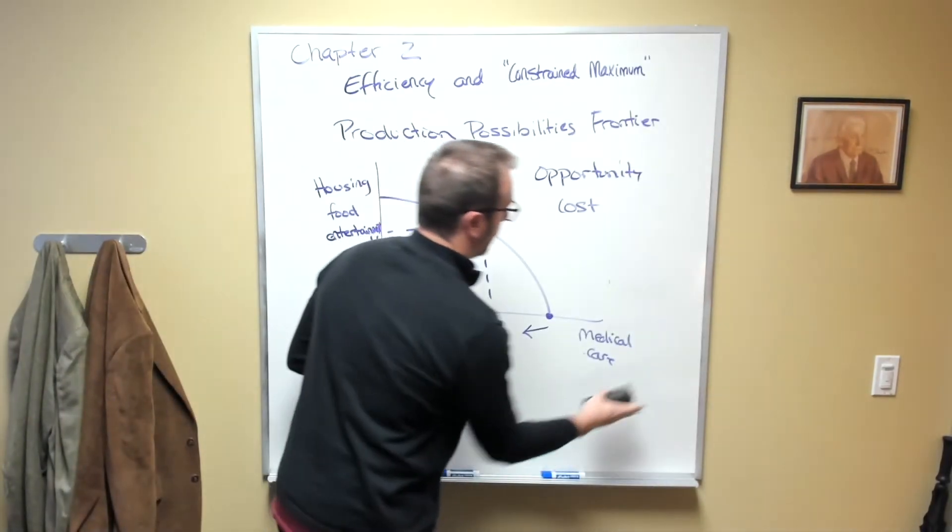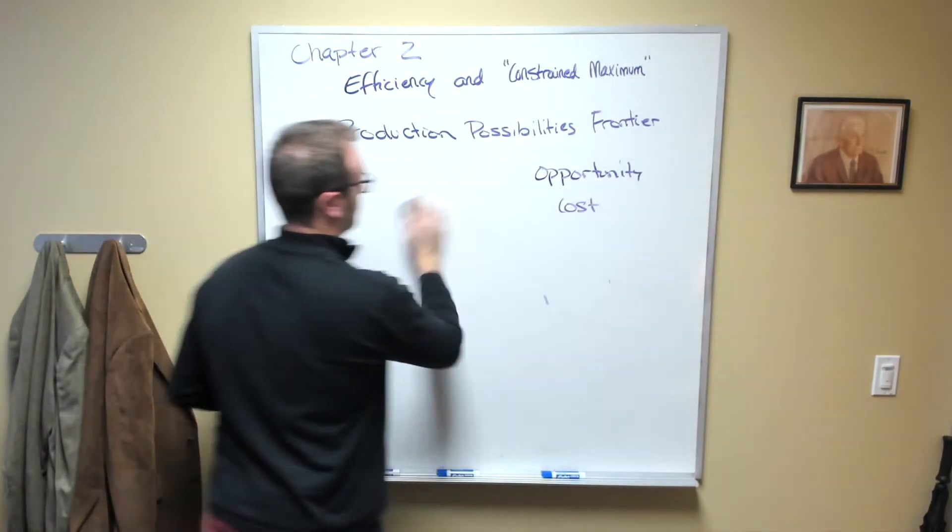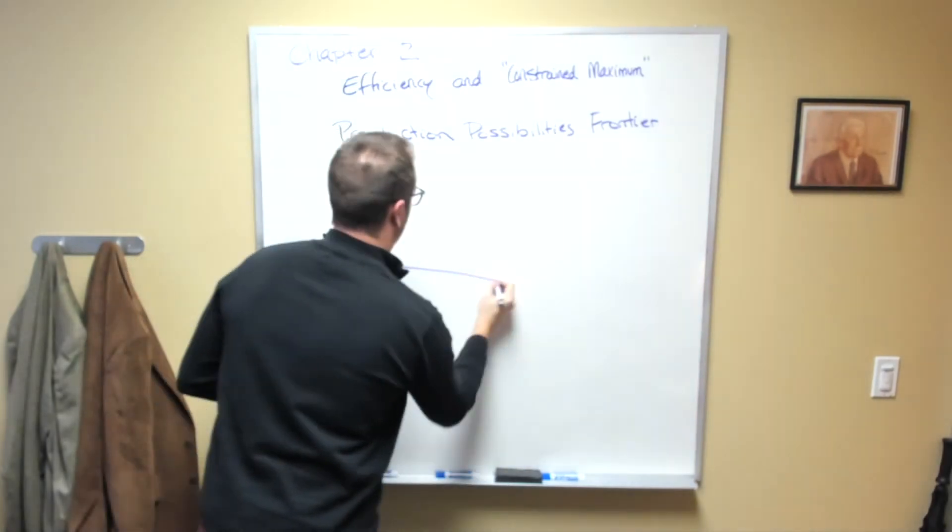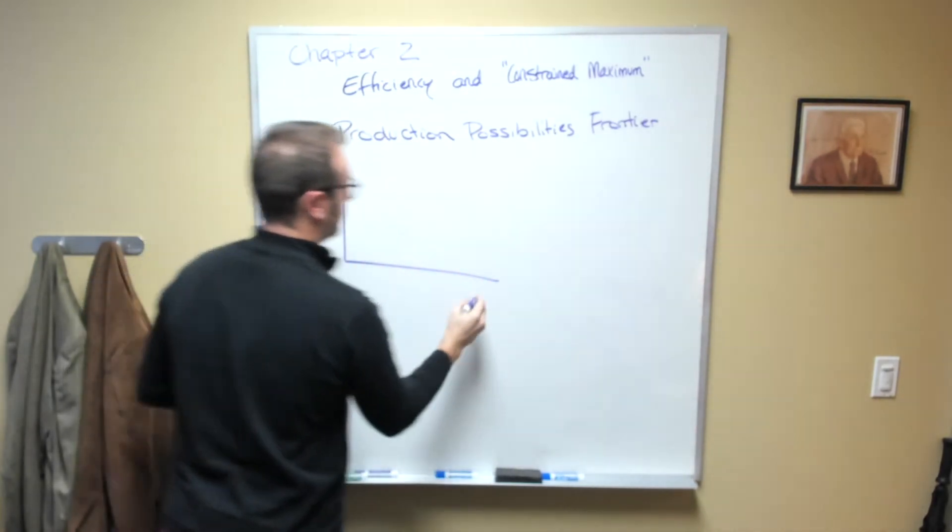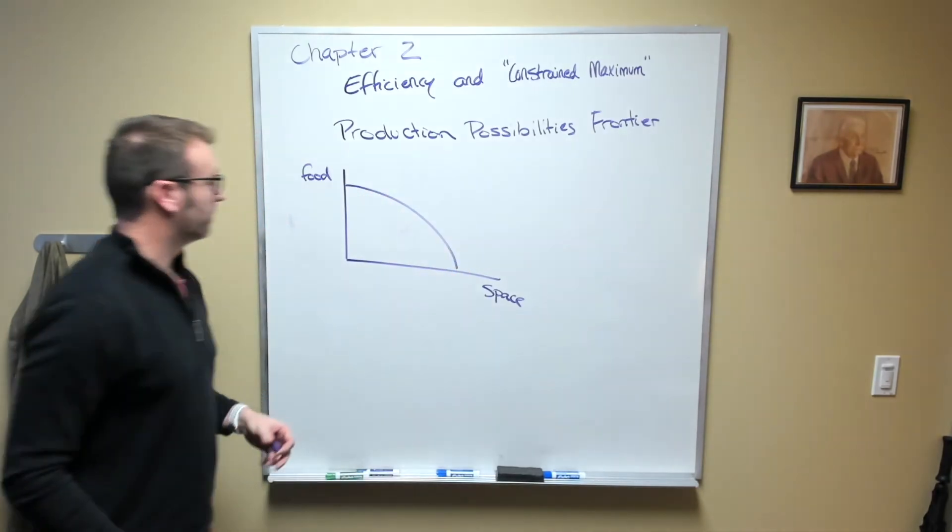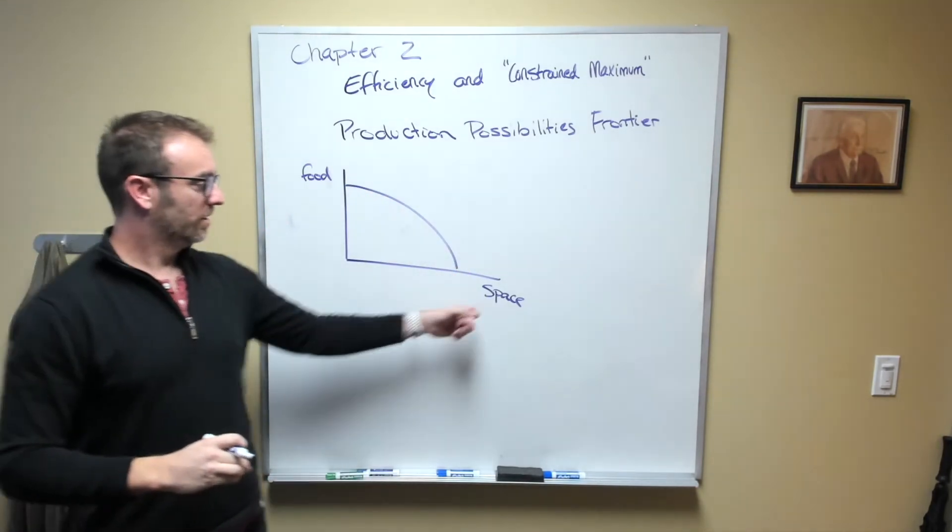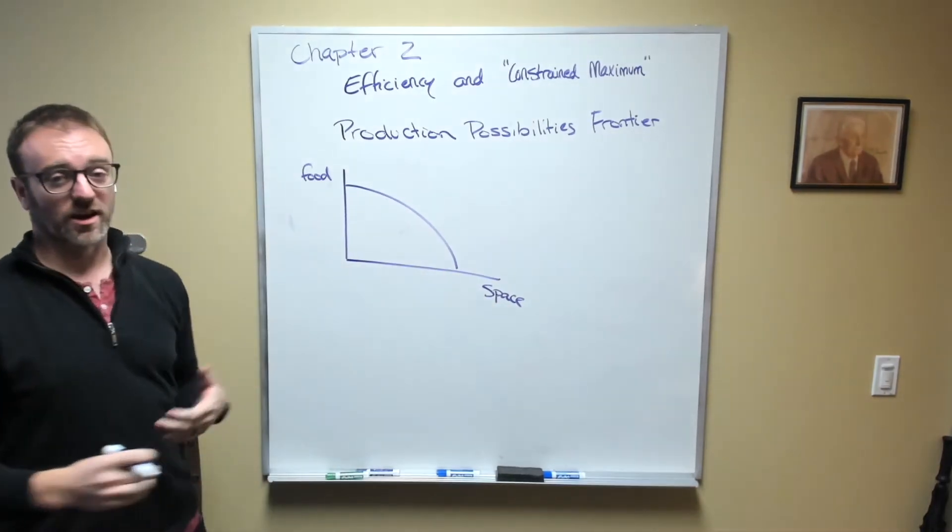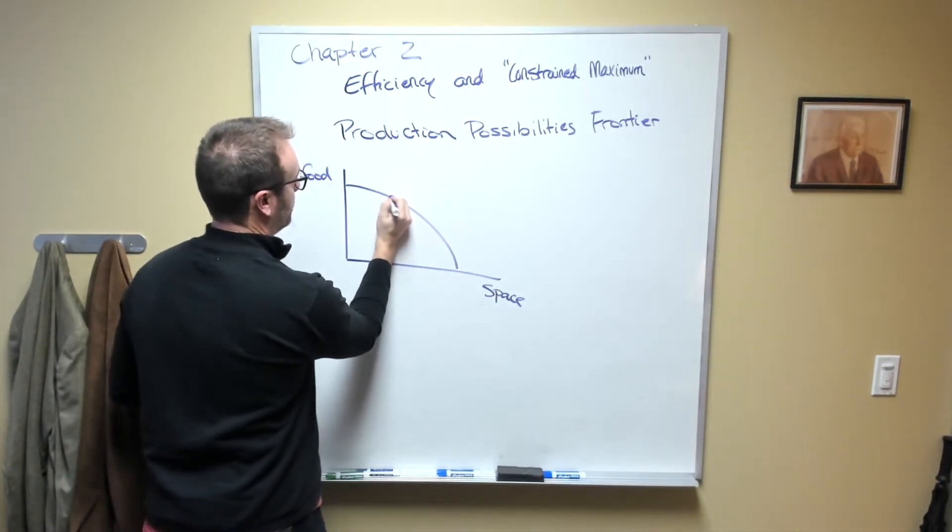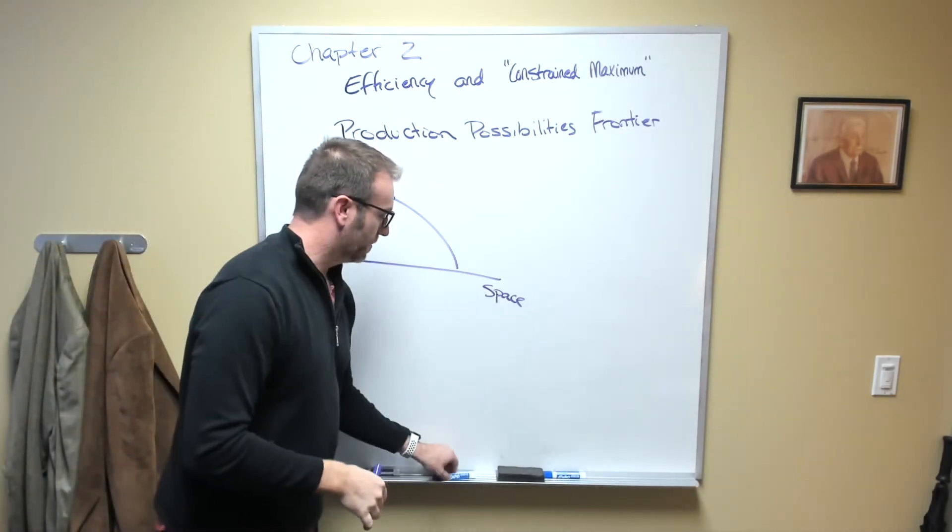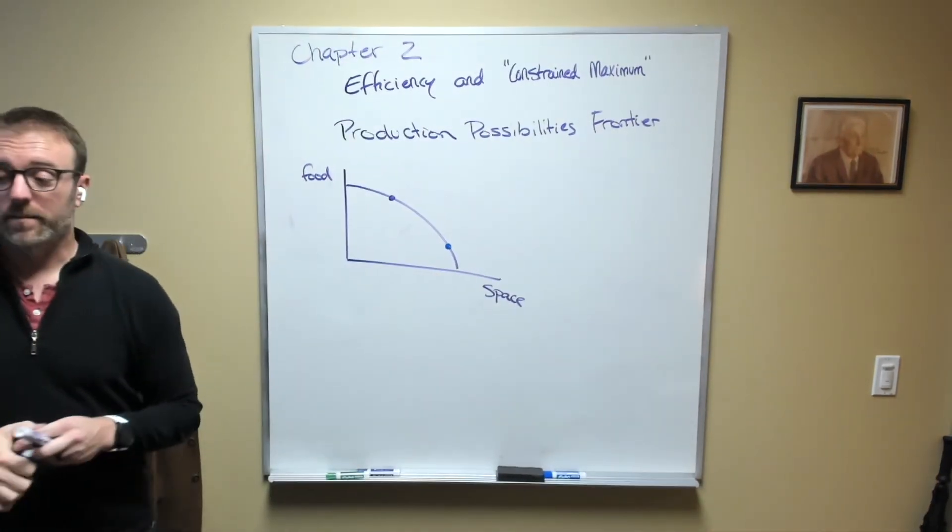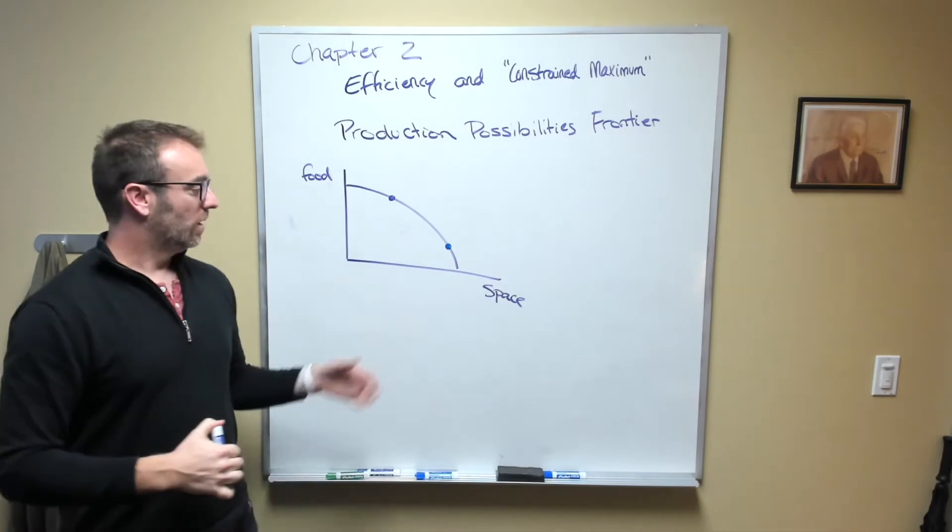We had the beginnings of the space race. We had a situation where we could say on one axis we have food and on the other we have going to space. We still face a production possibilities frontier. The more resources we dedicate toward getting a man into space, the less resources we have dedicated toward producing food. In the United States, we seemed initially to be here, but the former Soviet Union seemed to be operating closer to here, where most of their GDP or most of their resources had gone toward getting into space.